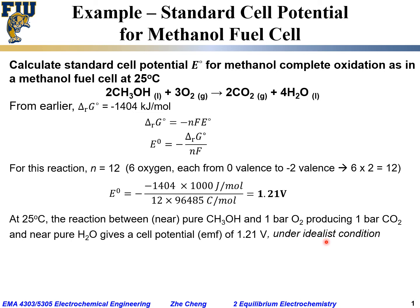I want to emphasize that 1.21 volts is theoretical, under idealistic conditions. In practice, a methanol fuel cell would have an open circuit voltage much lower than this due to complications such as crossover. The actual open circuit voltage is quite often around 0.9 volts. Under idealistic conditions — perfect separation of reactants to products, no leakage — we'd get 1.21 volts.